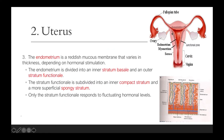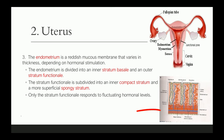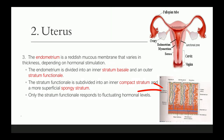The third layer is the endometrium — a reddish mucous membrane that varies in thickness depending on hormonal stimulation. The endometrium is divided into an inner stratum basale and an outer stratum functionale. The stratum functionale is divided into an inner compact stratum and a more superficial spongy stratum. Only the stratum functionale responds to fluctuating hormonal levels.